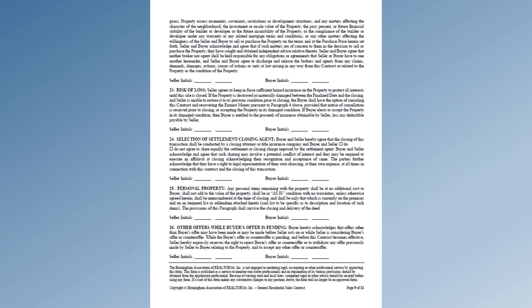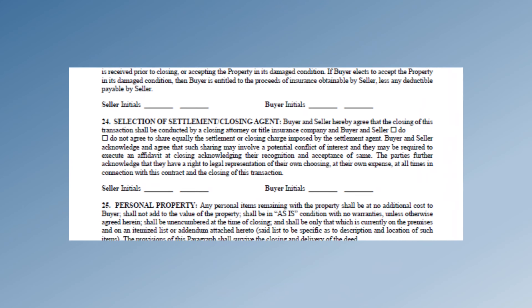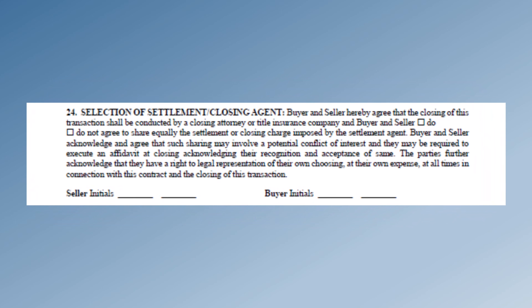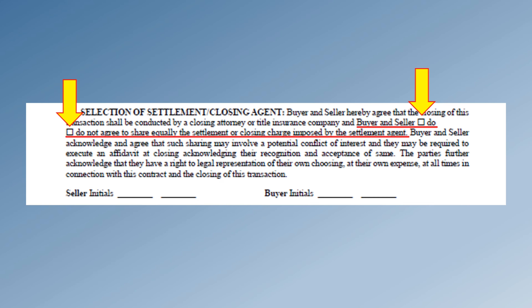Today we're going to look at paragraph 24 which appears on page 9. That paragraph discusses the settlement fee, which is what many people refer to as the attorney's fee. Here the parties can choose whether or not to split that fee. Now if nothing is checked here or if the no box is checked, some settlement agents are going to interpret that to be a cost to be borne solely by the buyer and treat it that way.